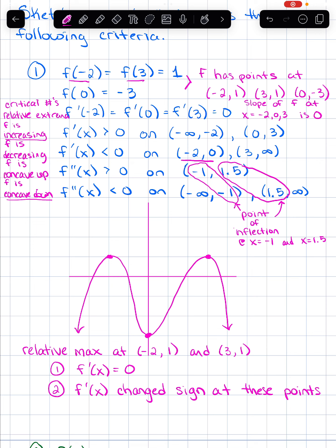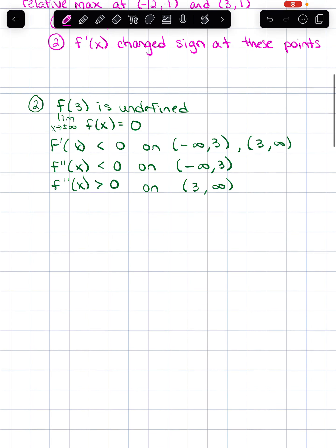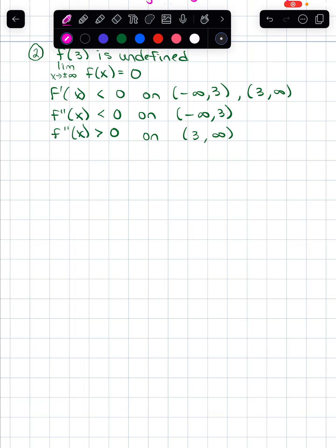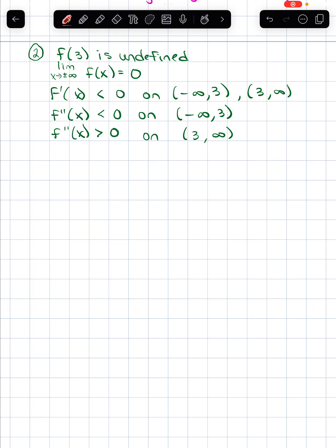Let's go on to a slightly more interesting second example. Take a moment, write out the analysis first — what does each line tell you about the function — then try to sketch it. Welcome back. f of 3 is undefined. There are two possibilities: f has a hole or a vertical asymptote at x equals 3.